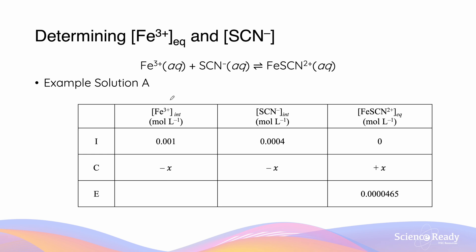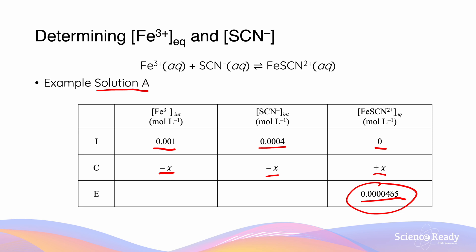Let's look at solution A as an example. We've calculated that initially there was 0.001 mol/L of Fe³⁺ and 0.0004 mol/L of thiocyanate. Initially, there was no product. However, using our calibration curve, we know there was a final concentration of product of 0.0000465 mol/L. Since they react in a 1:1:1 ratio, the product gained x, while Fe³⁺ lost x and thiocyanate also lost x. This means x = 0.0000465 mol/L.